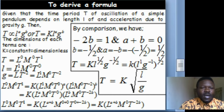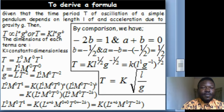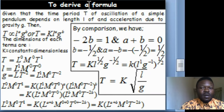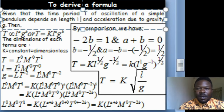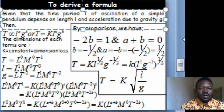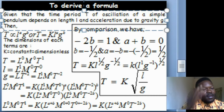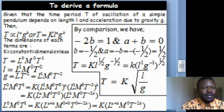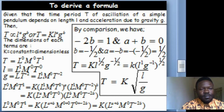Now let's see how we can use dimensional analysis to derive formulas. Given that the time period of oscillation of a simple pendulum depends on the length L of the board and on the acceleration due to gravity G, we say T is proportional to L raised to the power A times G raised to the power B. Or we write T equals K times L^A times G^B, where K is a dimensionless constant. We convert the proportionality to equality, which attracts the constant K.